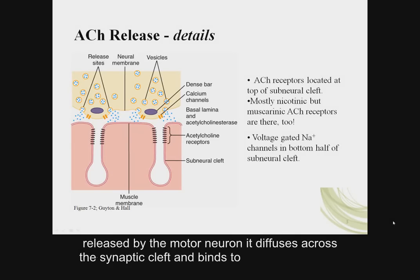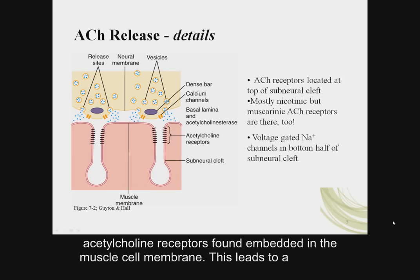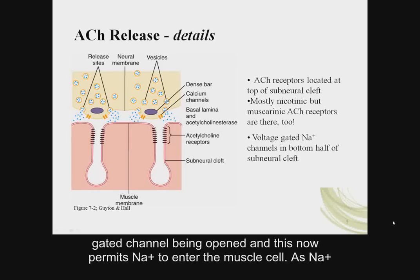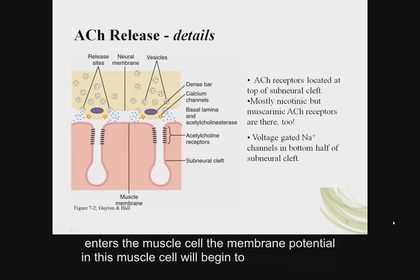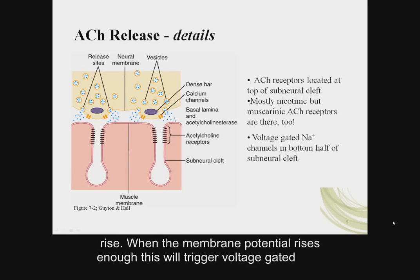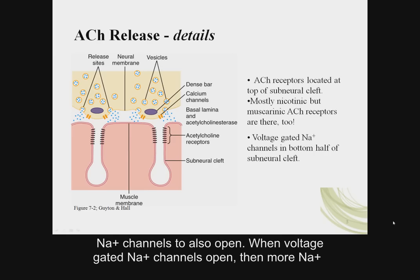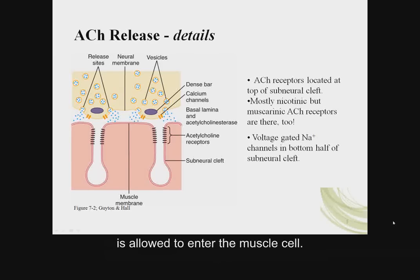When acetylcholine is released by the motor neuron, it diffuses across the synaptic cleft and binds to acetylcholine receptors found embedded in the muscle cell membrane. This leads to a gated channel being opened, which permits sodium to enter the muscle cell. As sodium enters the muscle cell, the membrane potential will begin to rise. When the membrane potential rises enough, this will trigger voltage-gated sodium channels to also open, allowing more sodium to enter the muscle cell.